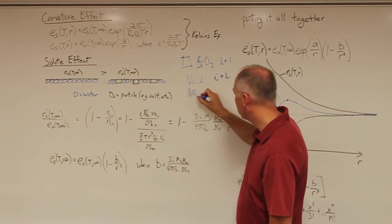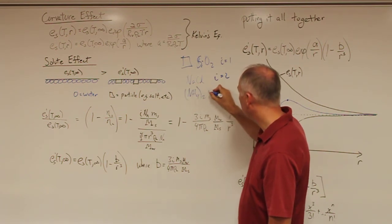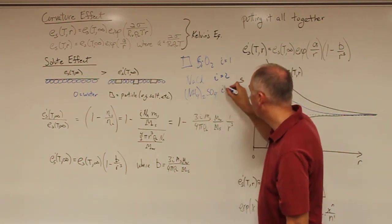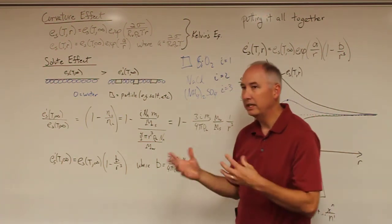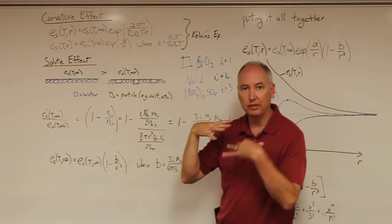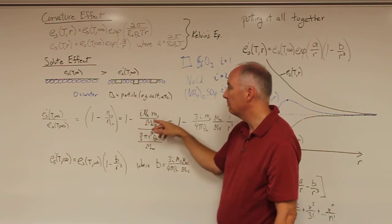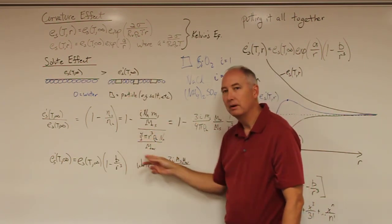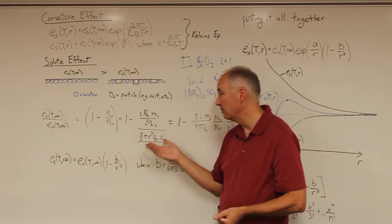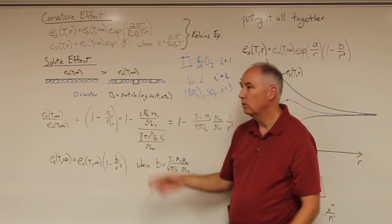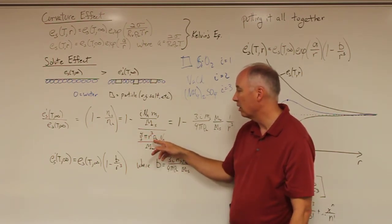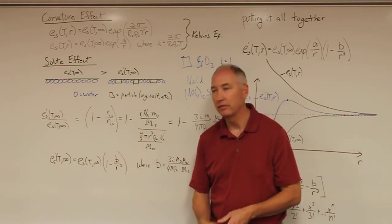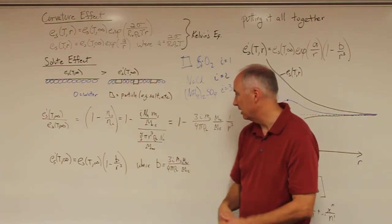If you have ammonium sulfate, (NH₄)₂SO₄, when this goes into solution, you end up with two ammonium ions and one sulfate ion, and that will have a Van't Hoff factor of 3. So it's really looking at the number of ions available at the interface. This represents the number of molecules, or ions in this case, present at that interface, divided by the number of molecules in the water droplet. We know that the mass of the water droplet is 4/3 pi r cubed rho L; divide by the molecular weight of water and multiply by Avogadro's number to get the number of molecules present.